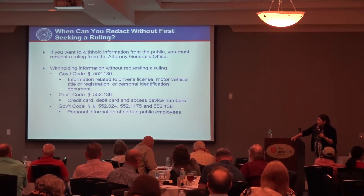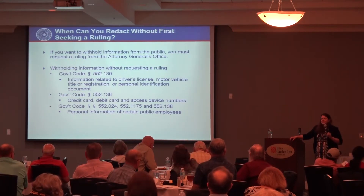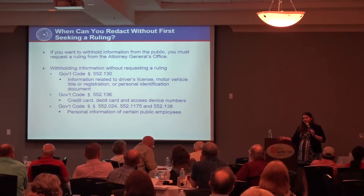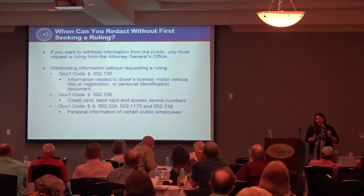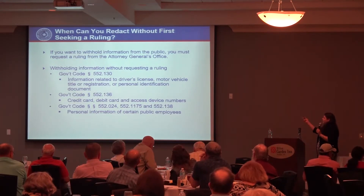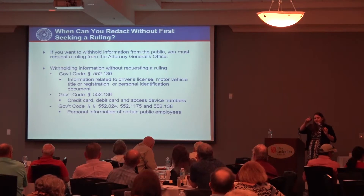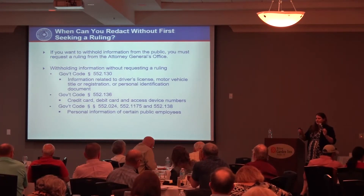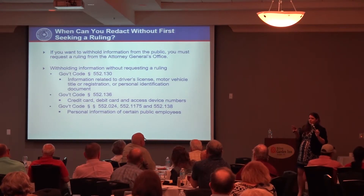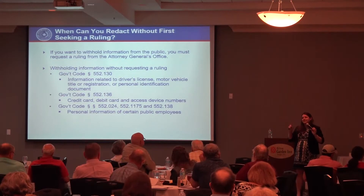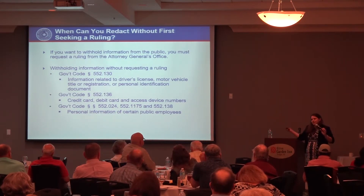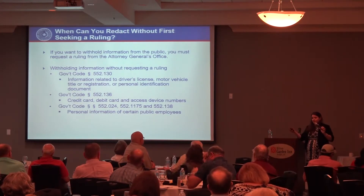Section 552.136 covers credit card, debit card, and access device numbers. If you have a request for a bank statement showing your governmental body's account number, you can redact that account number using the proper form without going through the whole ruling process. Sections 552.024, 552.1175, and 552.138 deal with employee home address and phone number, family member information, emergency contact, and social security number — if the employee has elected for that information to be private.